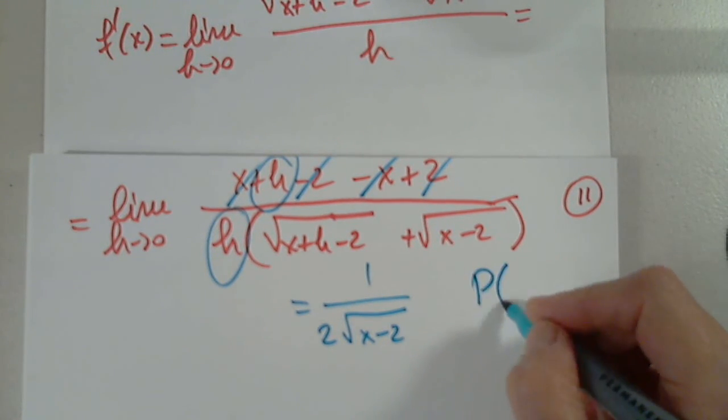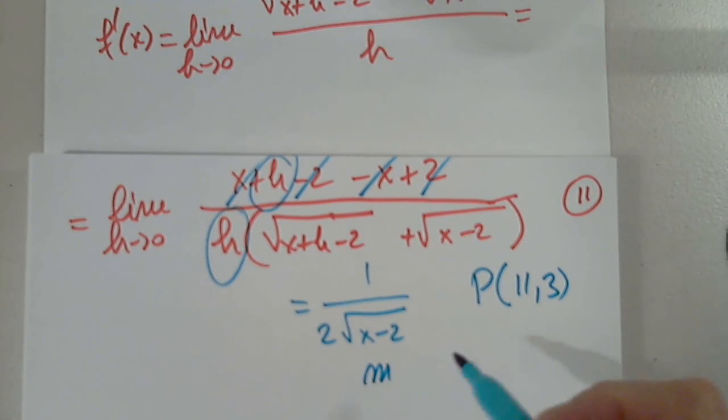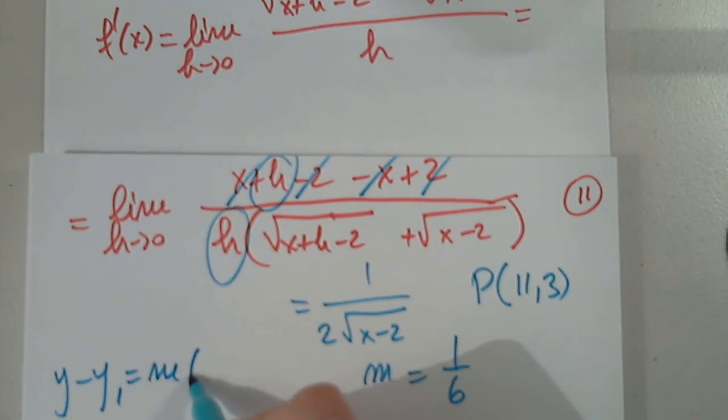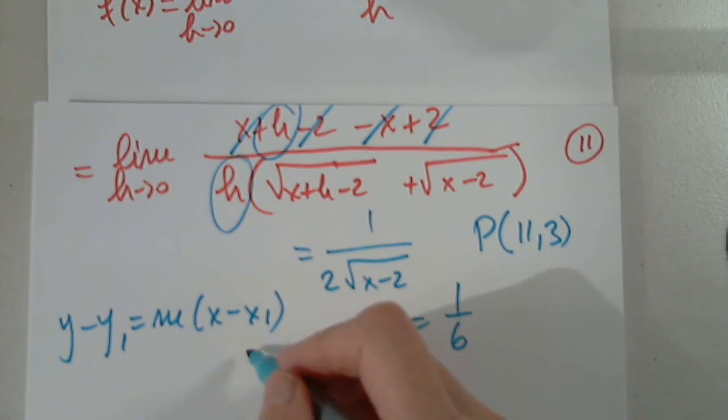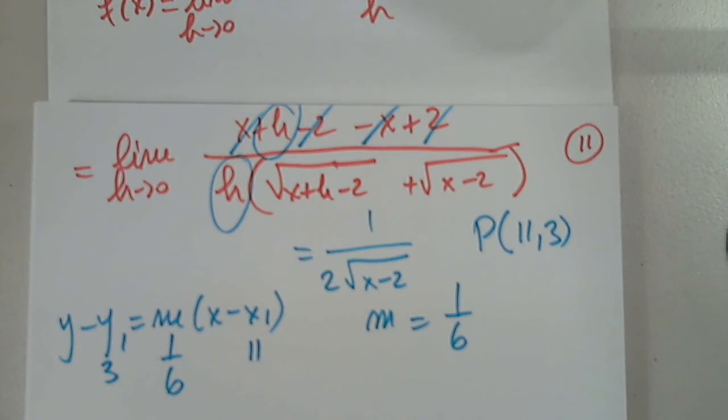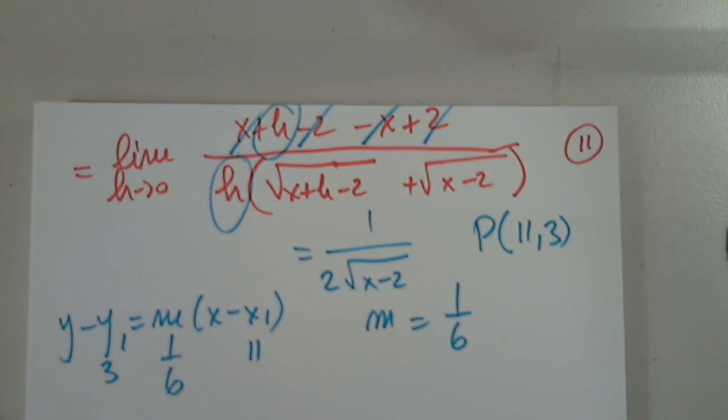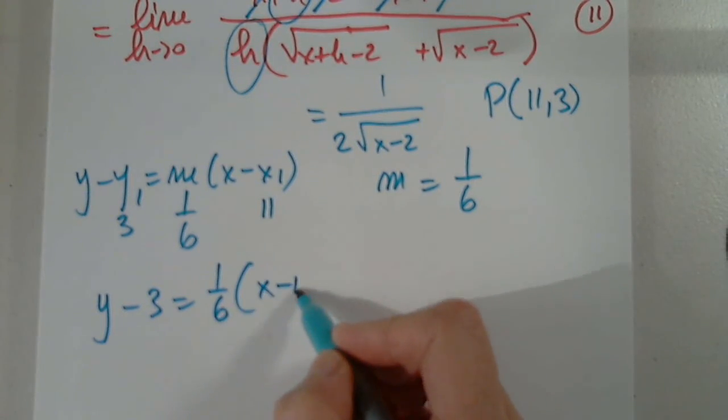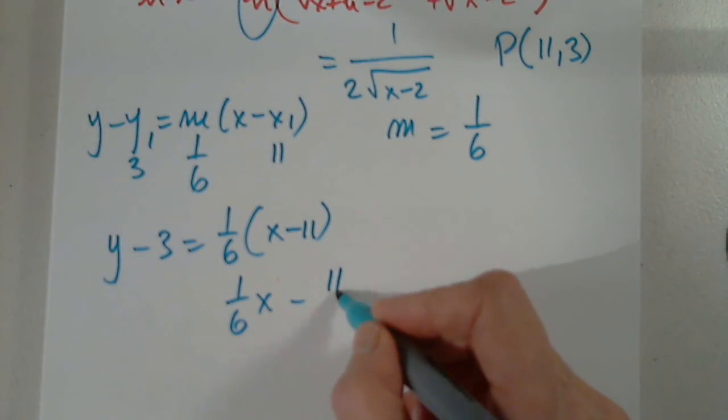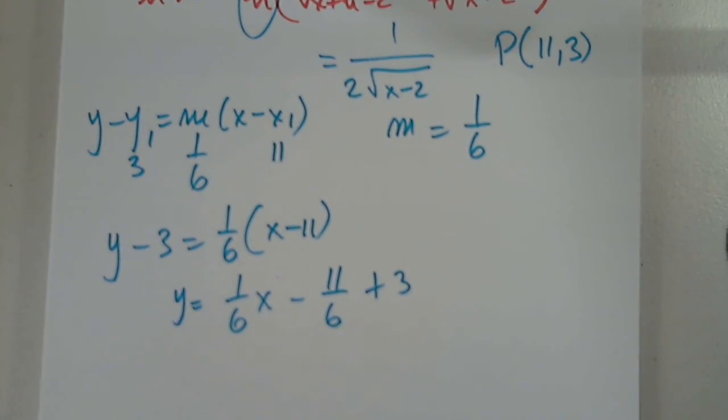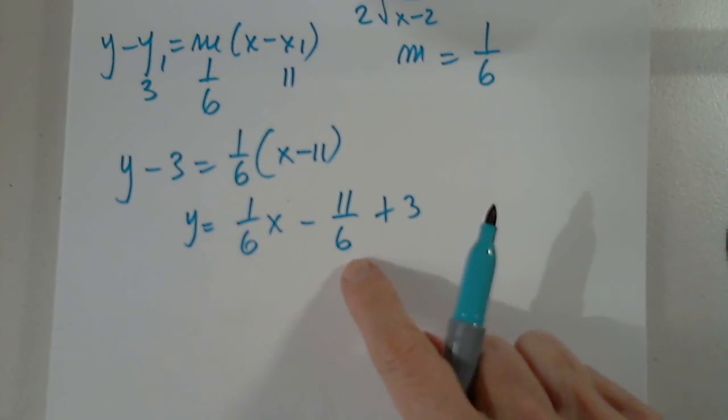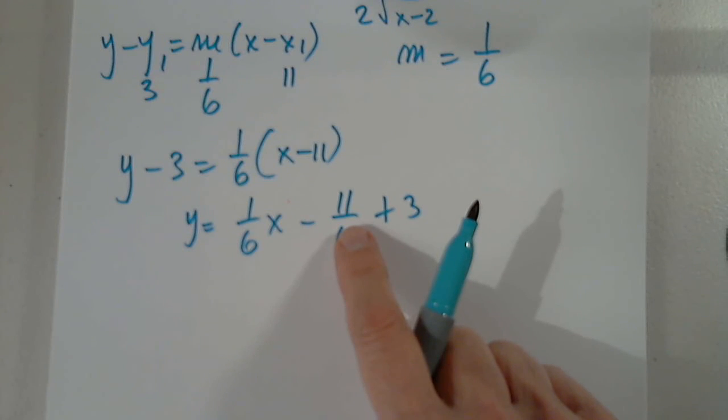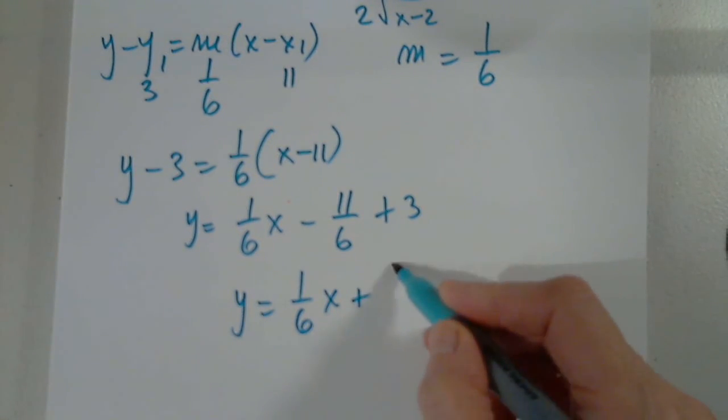The point is given to us, point P 11 comma 3. So then the slope when x is 11, 11 minus 2 is 9. The square root of 9 is 3 times 2 is 6. So we have 1 over 6. So then y minus y1 equals the slope times x minus x1. Where we have 11 and 3 and 1 over 6. And then I distribute 1 over 6 to this. So 1 over 6x minus 11 over 6 plus 3. So 6 times 3 is 18. 18 minus 11 is 7. So y equals 1 over 6x plus 7 over 6.